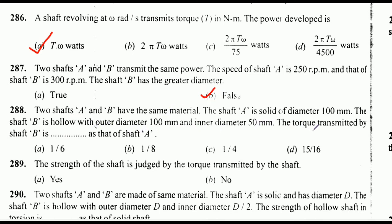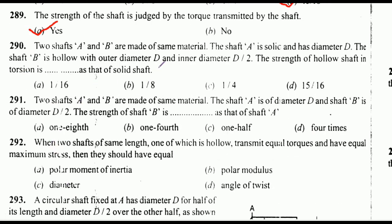Two shafts A and B have the same material. Shaft A is solid with diameter 100 mm; shaft B is hollow with outer diameter 100 mm and inner diameter 50 mm — the torque transmitted by shaft B is dash as that of shaft A. The correct answer is option D: 15/16. The strength of a shaft is judged by the torque transmitted — yes or no. Correct answer: yes.